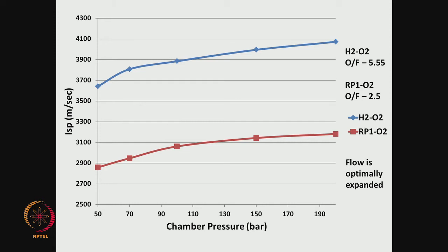Comparing hydrogen-oxygen and kerosene-oxygen systems: the red line shows the variation of kerosene-oxygen sea level ISP with chamber pressure under optimally expanded flow. With hydrogen as fuel, ISP is much higher than with kerosene. This is because the molecular weight of hydrogen combustion products is much lower, resulting in larger C* values for hydrogen systems compared to kerosene, giving a very good specific impulse.